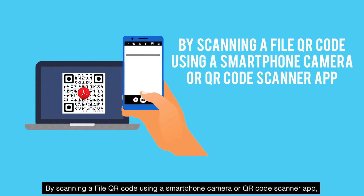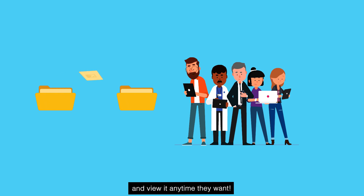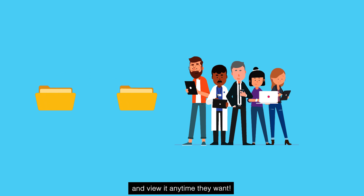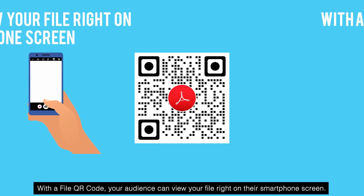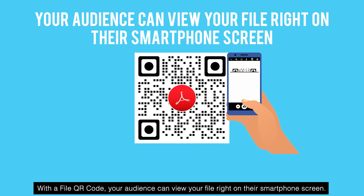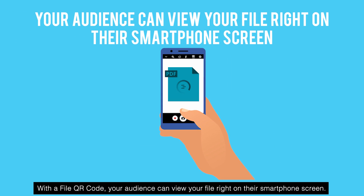By scanning a file QR code using a smartphone camera or QR code scanner app, your audience can get a soft copy of your file and view it at any time they want. With a file QR code, your audience can view your file right on their smartphone screen.